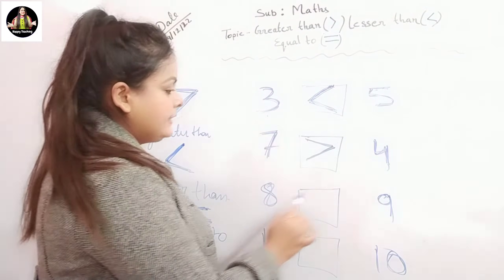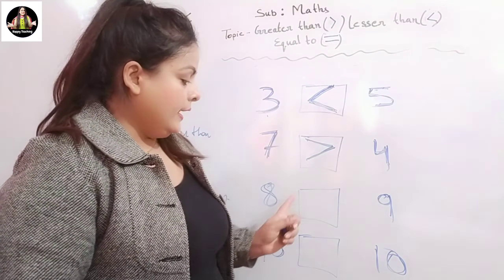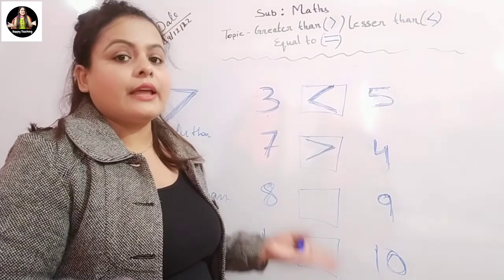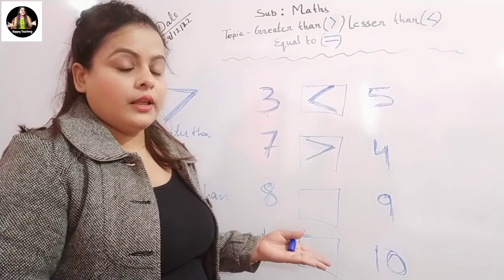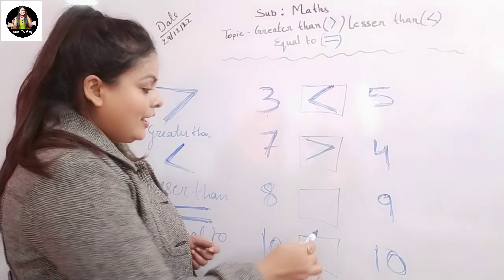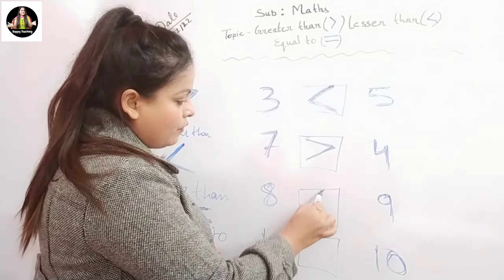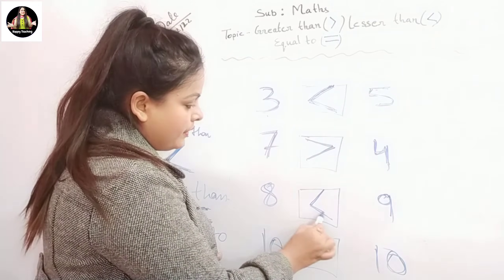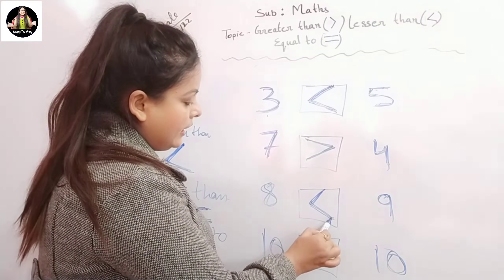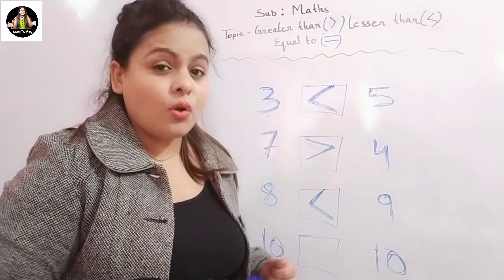Compare numbers eight and nine — which one is big and which one is small? Eight is bigger or nine is bigger? Which one is big? Nine! Very good. So here again we will open our mouth this side. The alligator will eat number nine because he is so hungry.